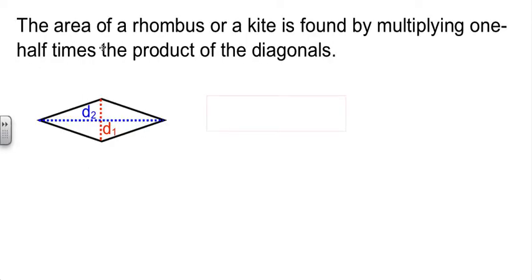That's not too bad. Now, when we deal with a rhombus or with a kite, either one, the formula works the same way for both of them. It's multiply the diagonals and then take half, or one-half times the product of the diagonals.